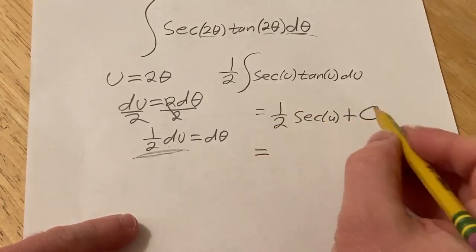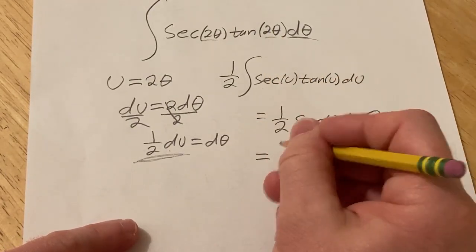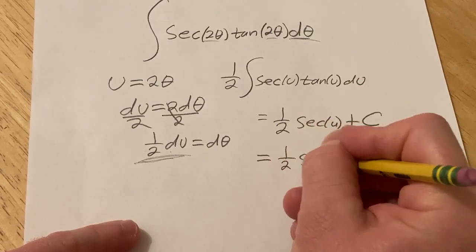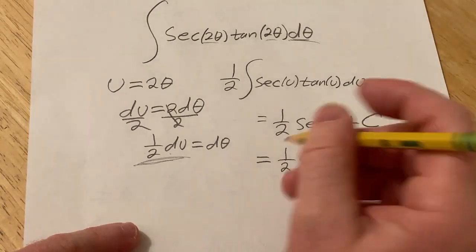Now, it's really important to remember that we need to go back to our original variable, which was theta. So this is 1 half secant of 2 theta plus our constant of integration, capital C.